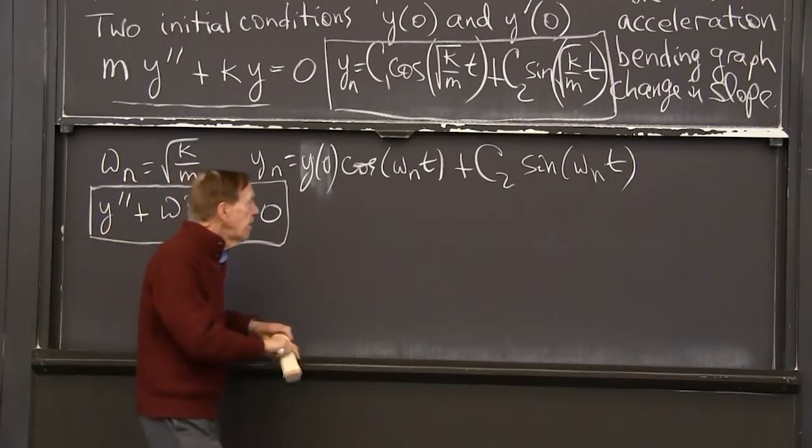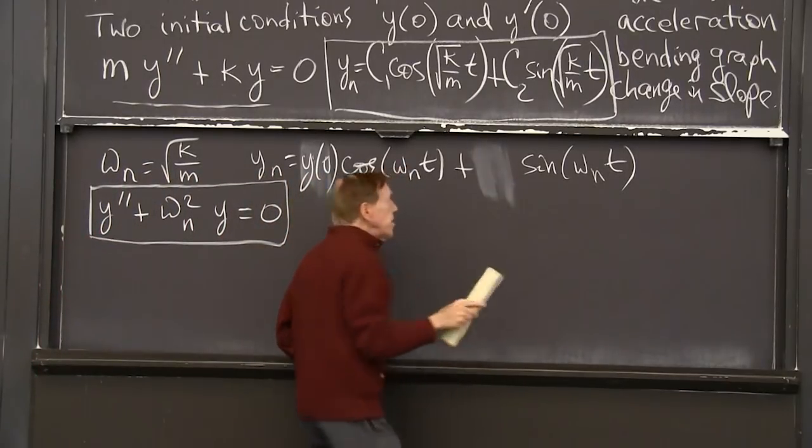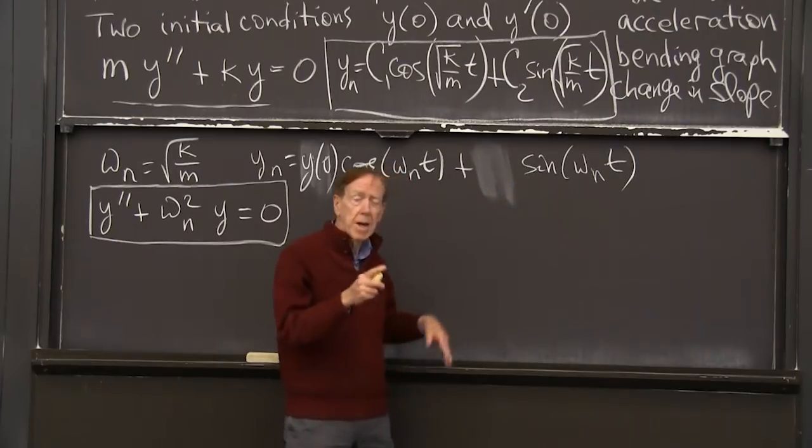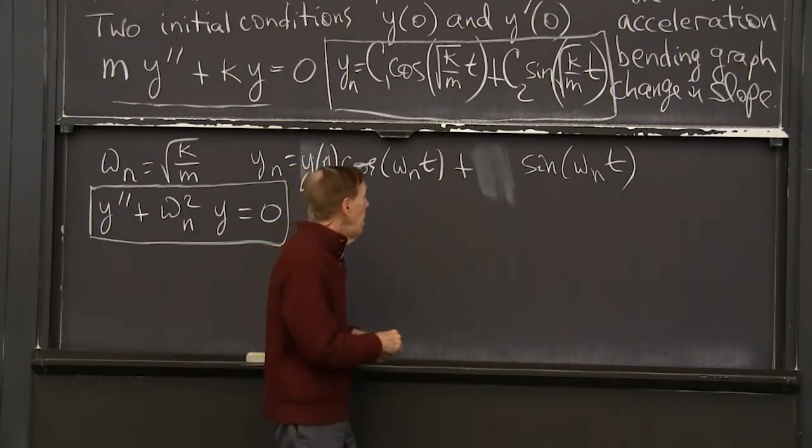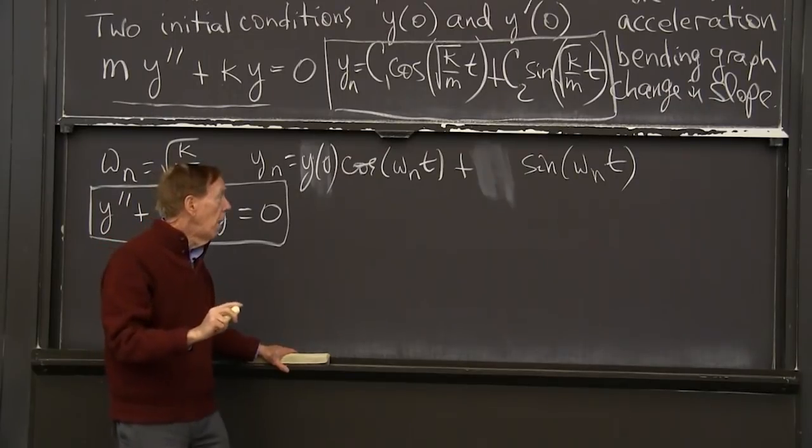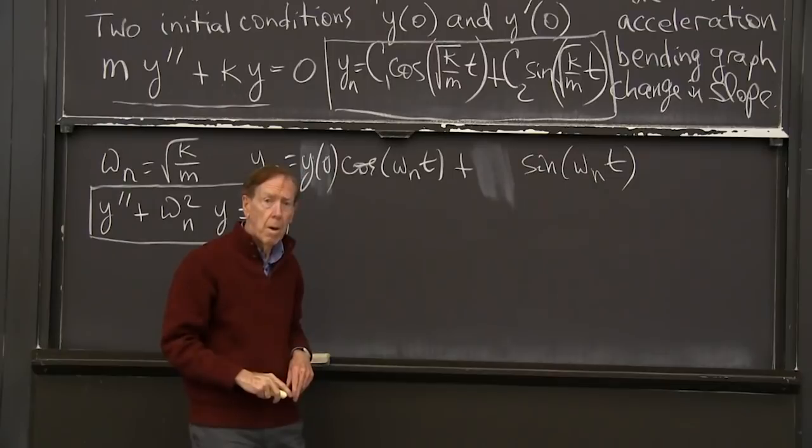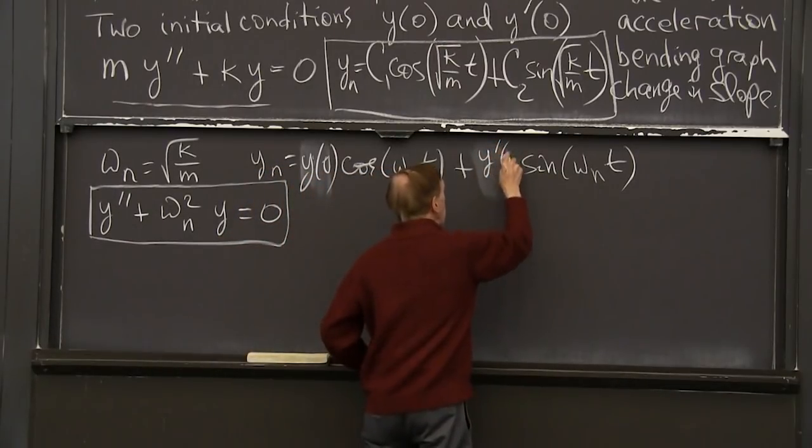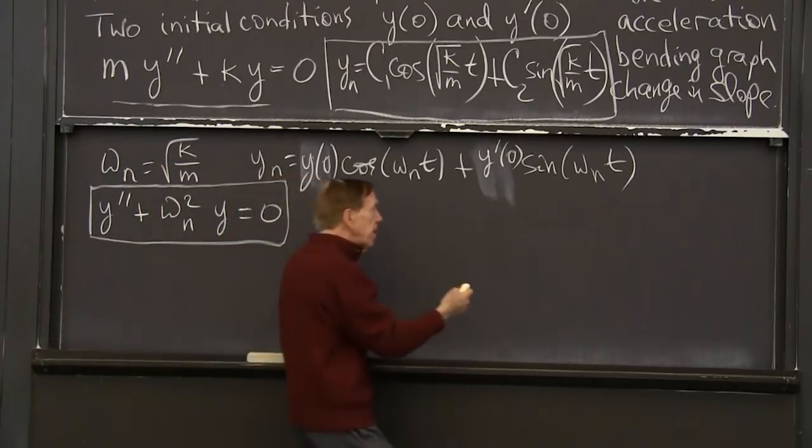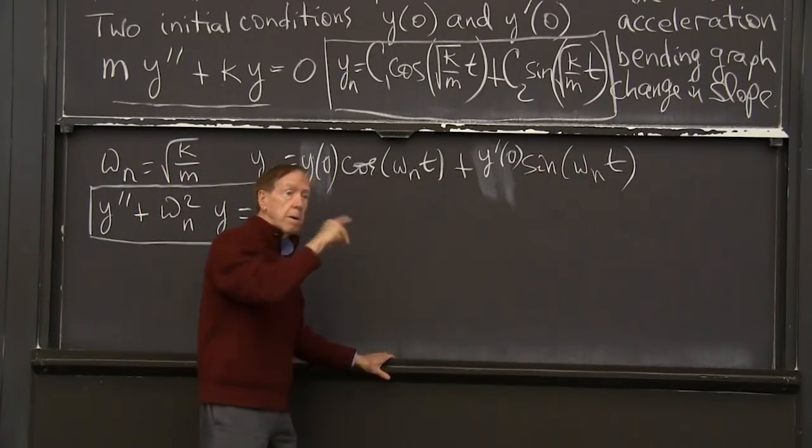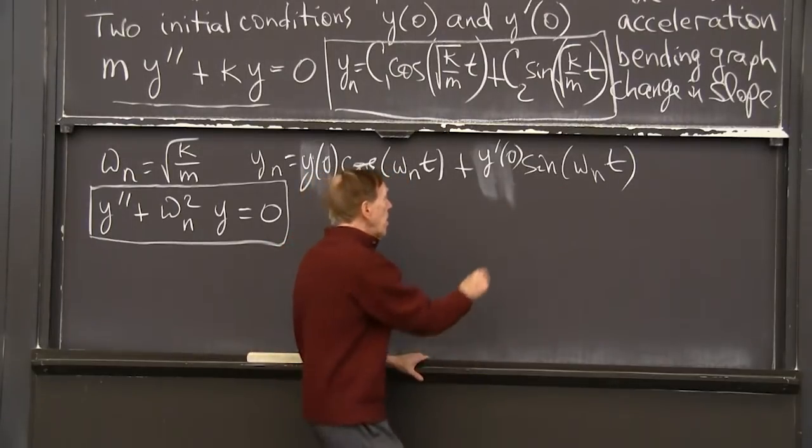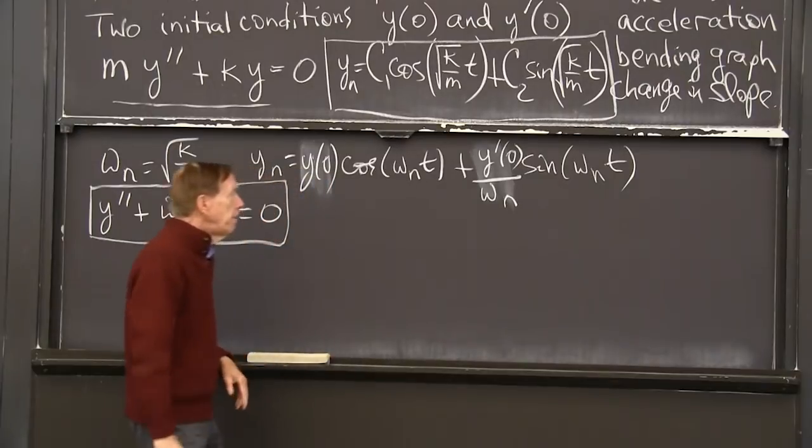And what about c2? Can I figure out c2? Well, that's going to involve the initial velocity, the derivative at t equals 0. Because the derivative of the sine is the cosine, which equals 1 at t equals 0, the derivative of this is the sine, which is 0. So when I'm looking at y prime, the derivative, I'm looking here at t equals 0. And I want y prime of 0. But I don't just want y prime of 0. Do you see that that doesn't have the right derivative at t equals 0? Because when I take the derivative, an omega_n, that constant, you remember that constant, the derivative of this will bring out an omega_n. So I better have an omega_n down here to cancel it. And now I've got it.